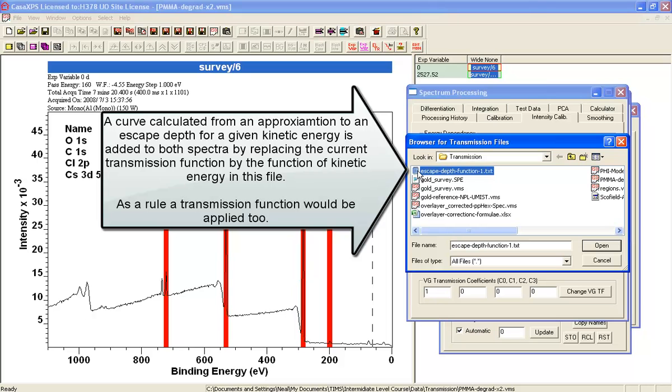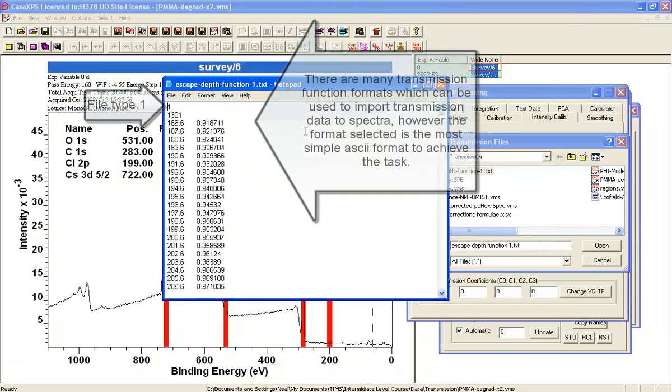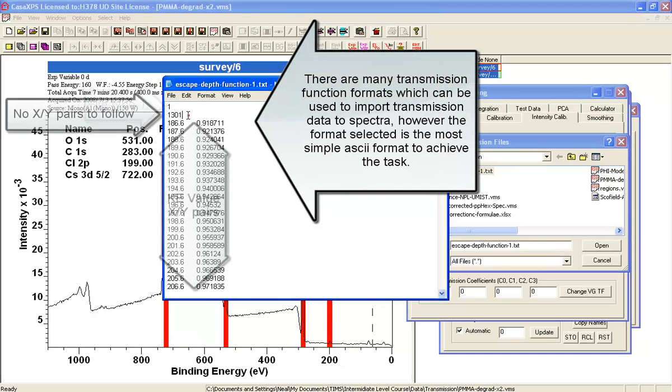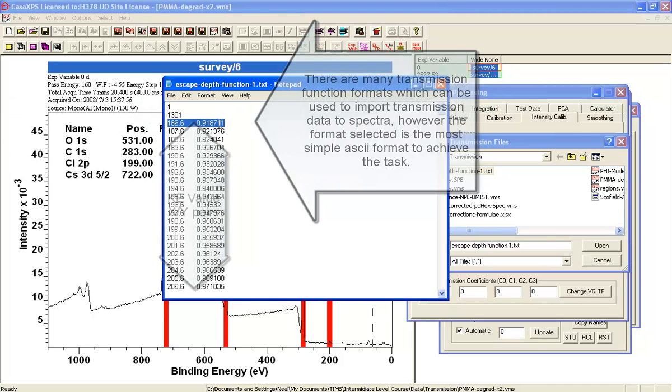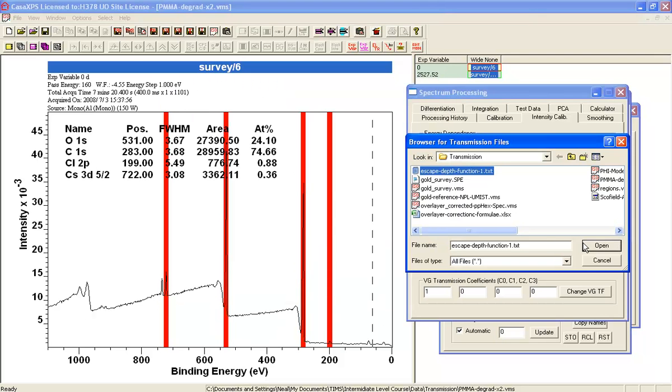If I open this file and edit with notepad, you can see it's got the type, the number of entries, and then pairs of kinetic energies and a scale factor. For each one of these kinetic energies, there's a different scale factor.